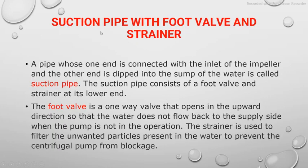The suction pipe is a pipe whose one end is connected to the inlet of the impeller and the other end is dipped into the sump of water. The pump is connected to a sump so that it can extract water from it — this pipe is known as the suction pipe. The suction pipe consists of a foot valve and a strainer at its lower end. The foot valve is a one-way valve that opens in the upward direction so that water does not flow back to the supply side when the pump is not in operation.